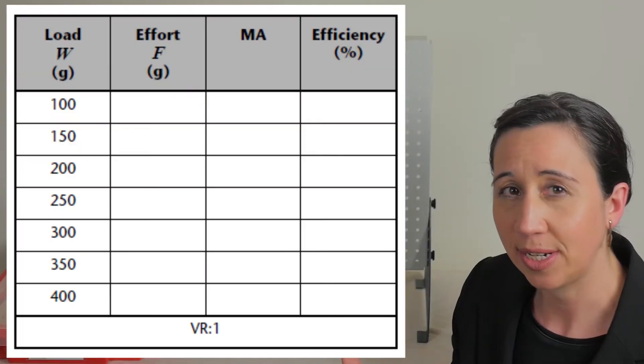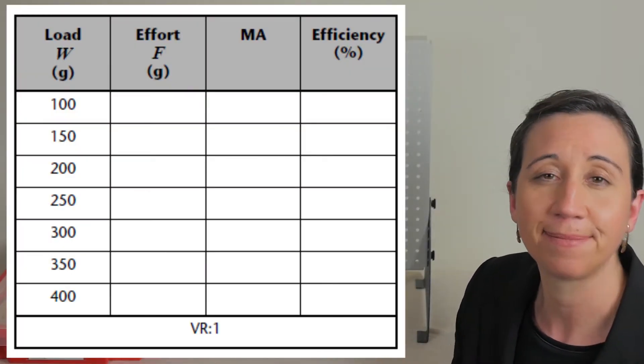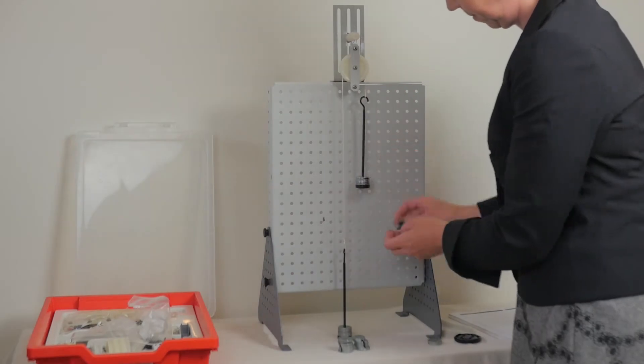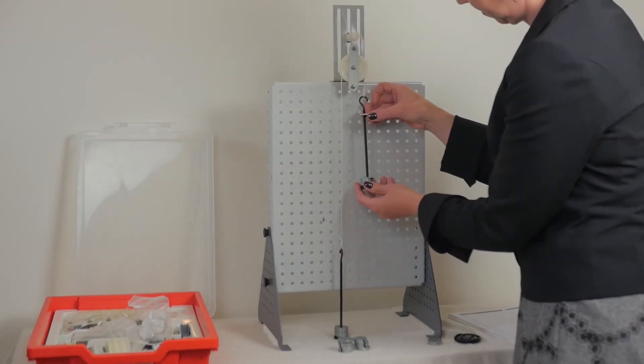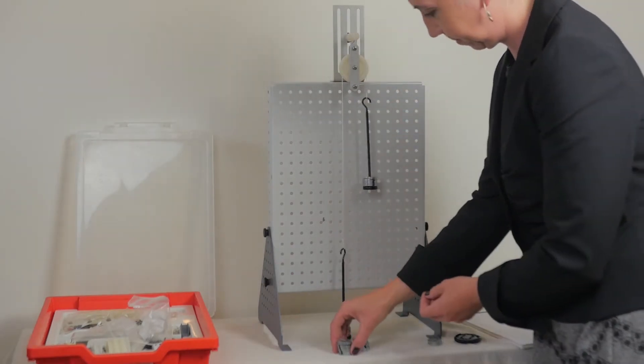This is the data you need to record in the table in the workbook supplied. Go on doing this by increasing the weights at increments of 50 grams, recording the weight and effort required for lifting each.